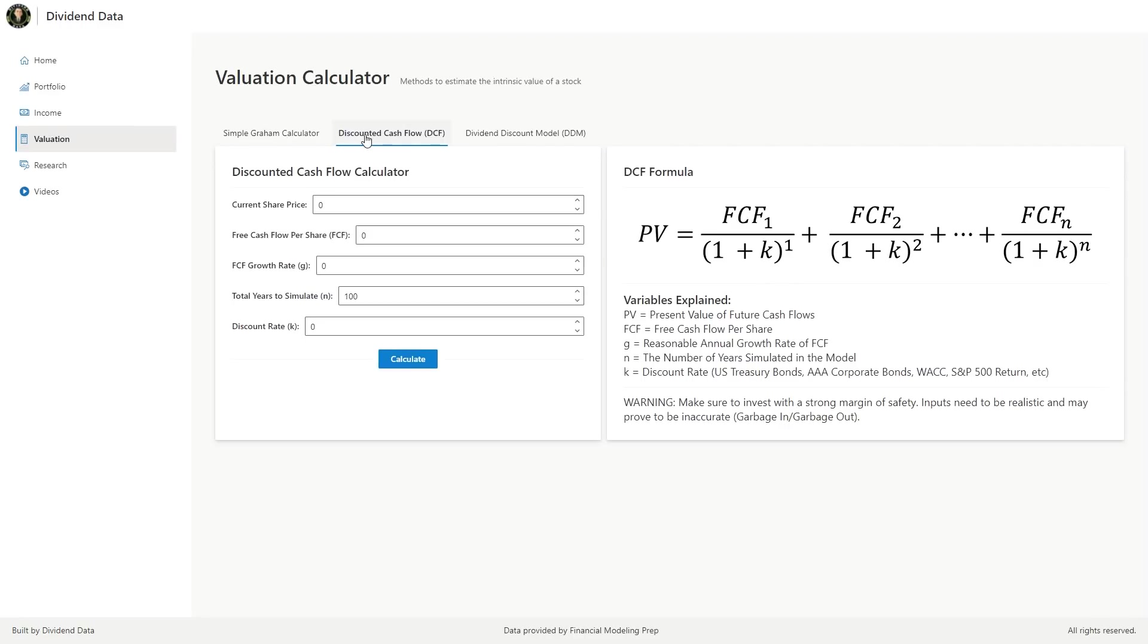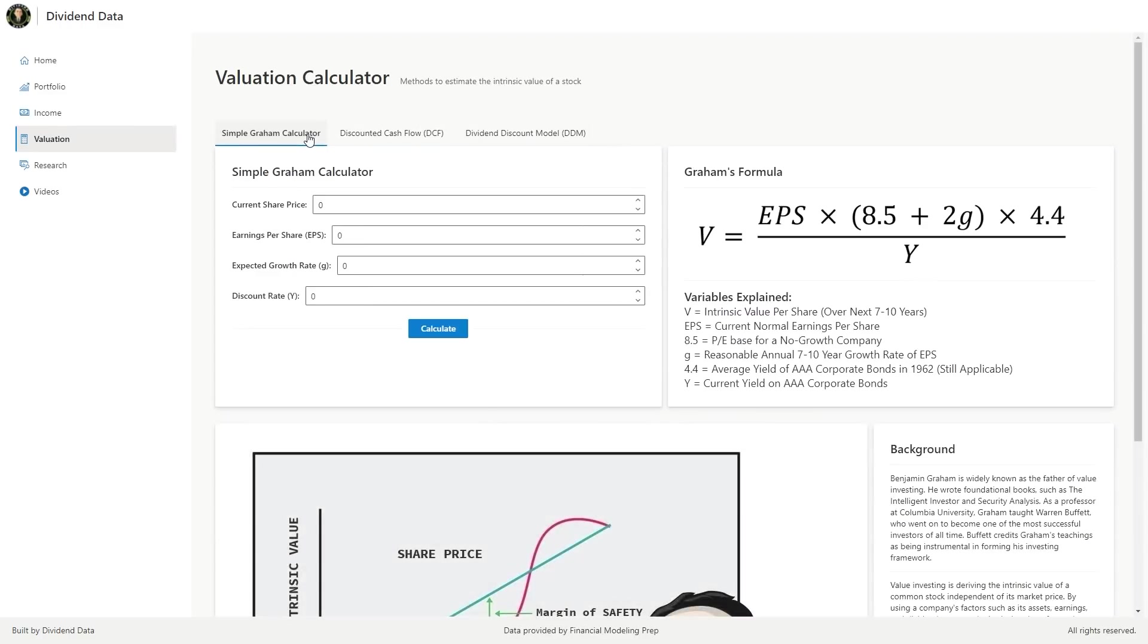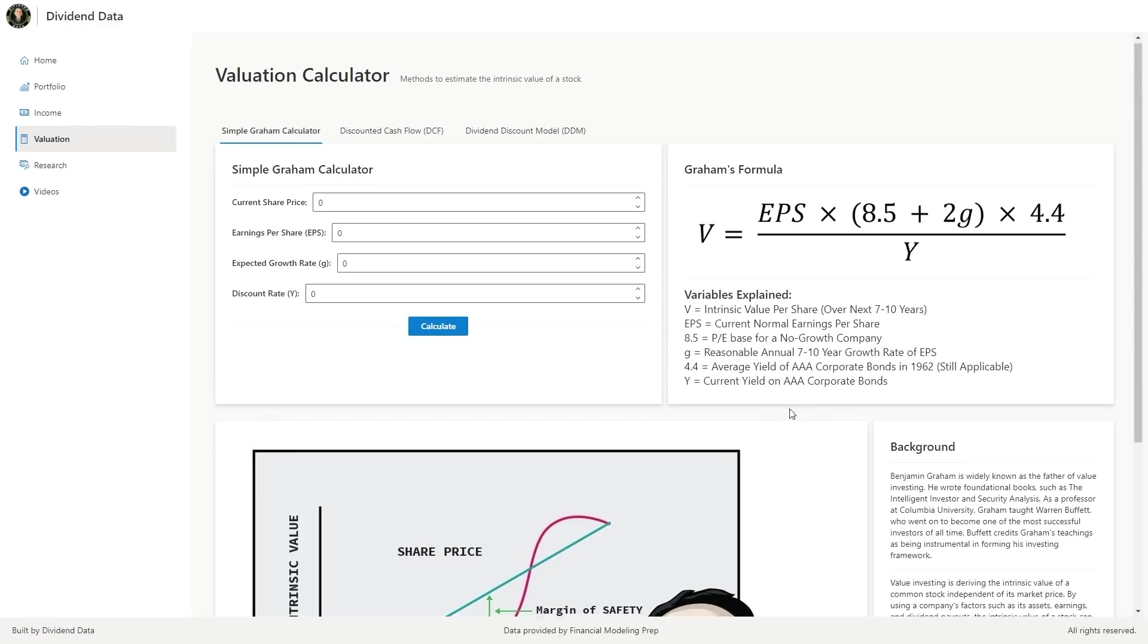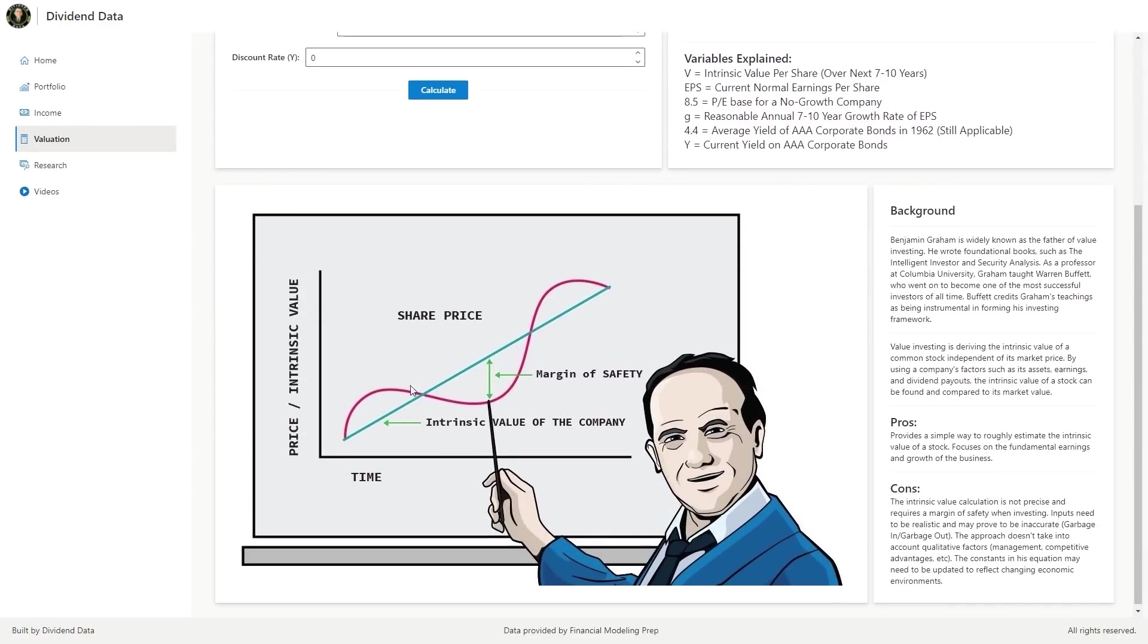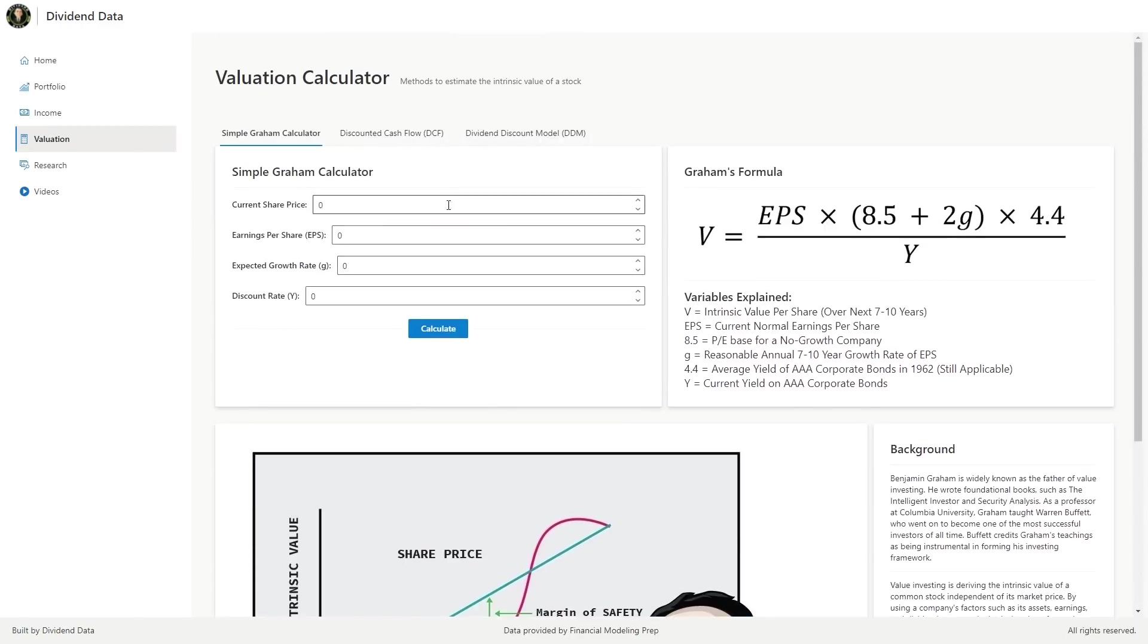This is the second video in a series where I analyze different methods of calculating intrinsic value. In the first video, I explained the technique of Ben Graham, who was actually Warren Buffett's mentor. So that's definitely worth watching to build some foundational ideas.